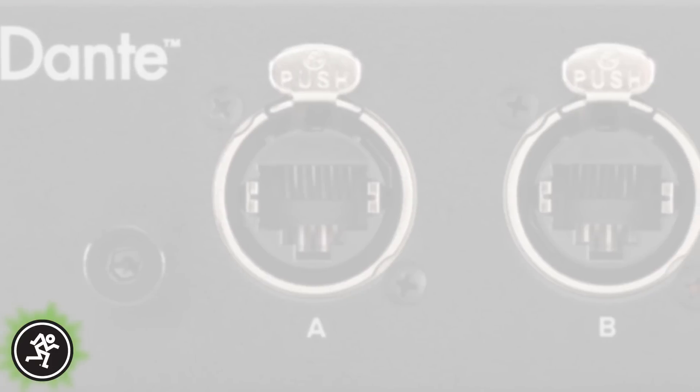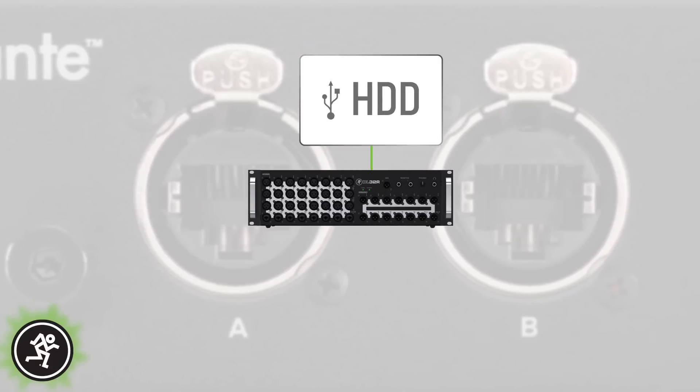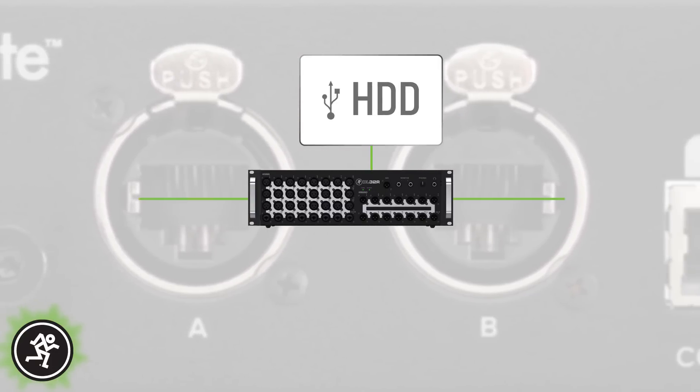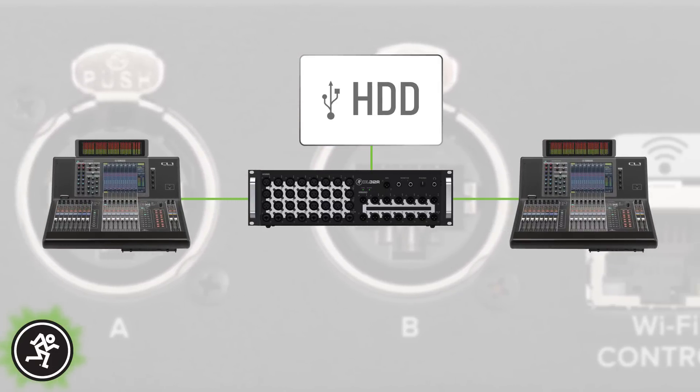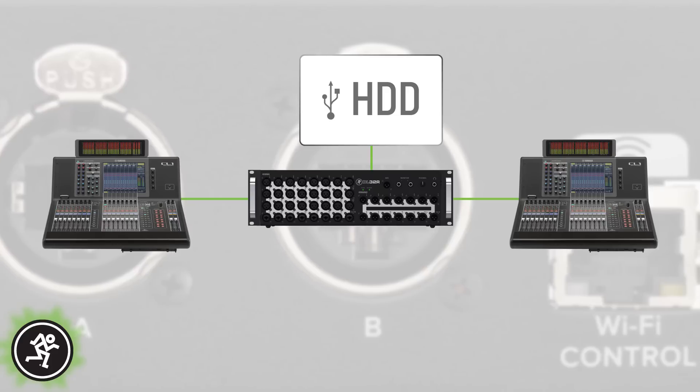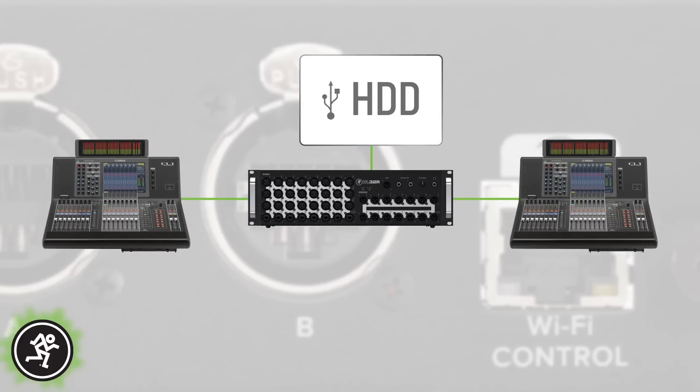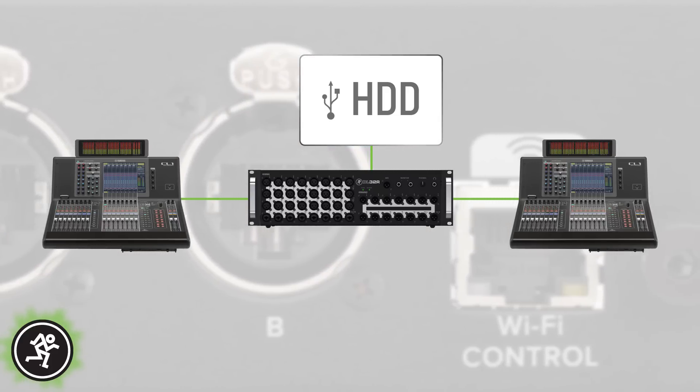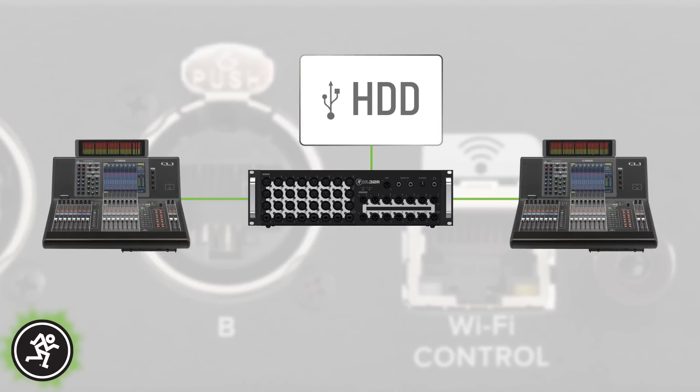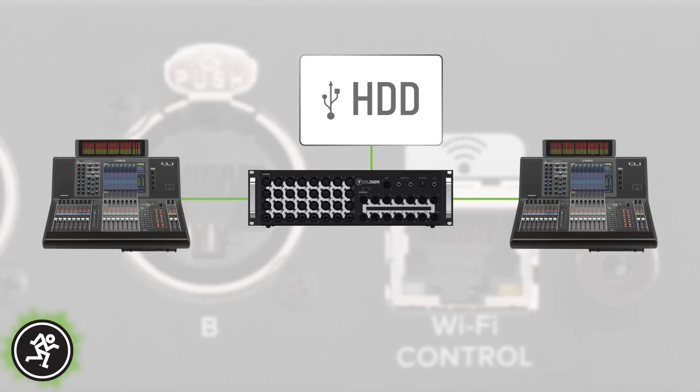The DL32R can also be installed as a standalone, direct-to-disc multi-track recorder for larger systems that have Dante-enabled consoles at front of house and monitors. Simply plug the DL32R with a formatted hard disk drive into the network and route the channels you wish to record and you're done, replacing racks of clumsy, interconnected audio interfaces with a simple, portable, three-space solution.